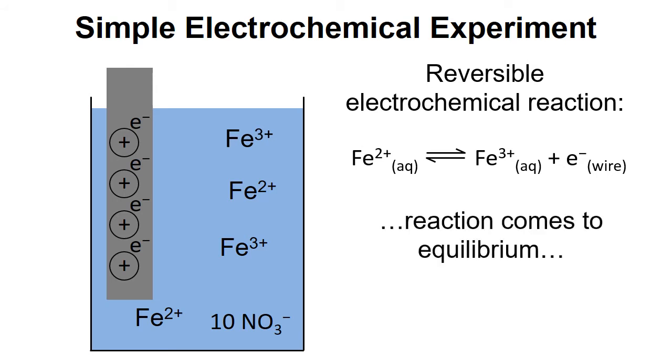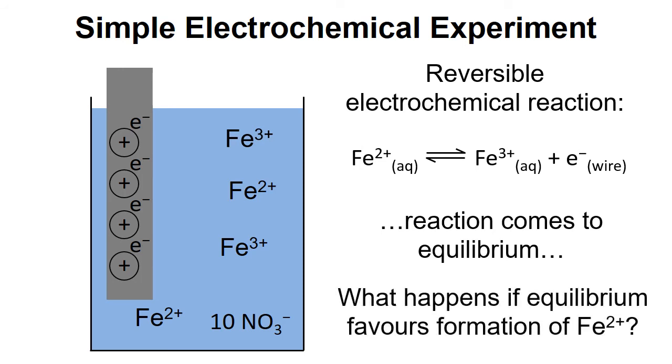Let's see what happens when this reaction comes to equilibrium, and in particular, what happens if the equilibrium favours the formation of Fe2+.